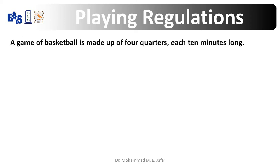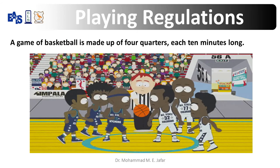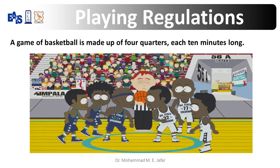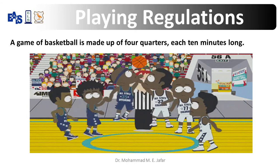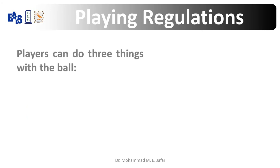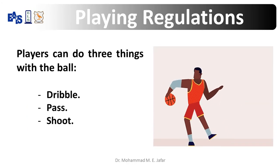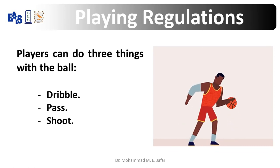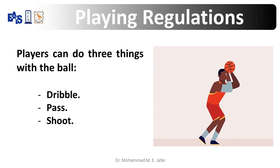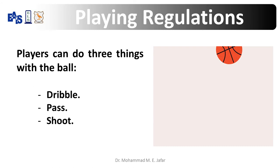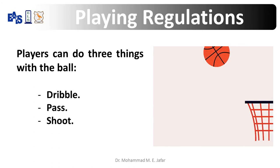A game of basketball is made up of four quarters, each 10 minutes long. At the start of every game, the referee throws the basketball up in the air and one player from each team tries to hit the ball to their teammates — that's called a jump ball. Players can do three things with the ball: dribble or bounce the ball, pass the ball to teammates, or shoot the ball to the hoop. The player with the ball tries to keep the ball and not let the other team get it.